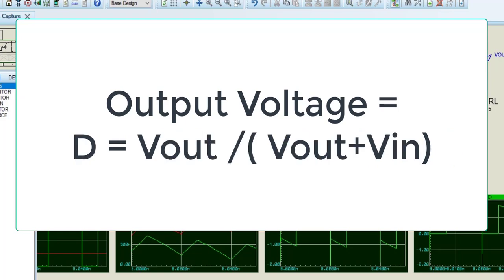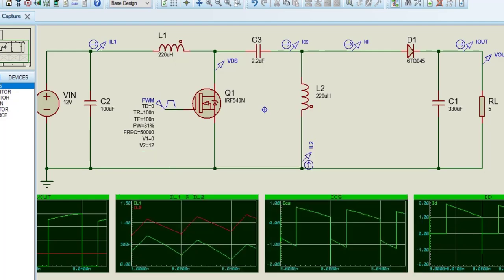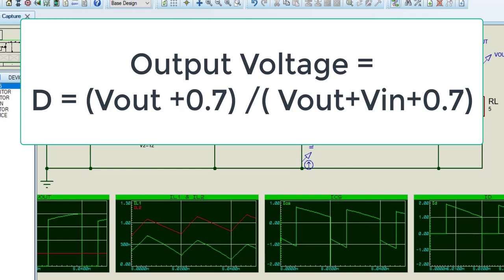In order to get duty cycle, we can rewrite this equation, whereas D is duty cycle, Vout is output voltage, and Vin is input voltage. But we also need to add losses of switching device. Let's say switching device loss is 0.7 volts. Then, we can write this formula like this, for this example.